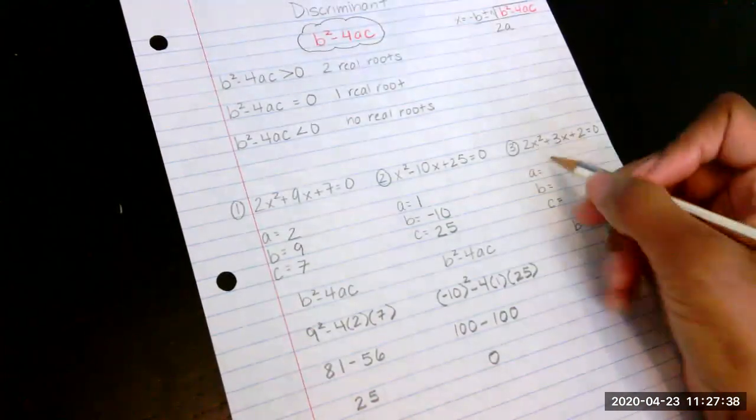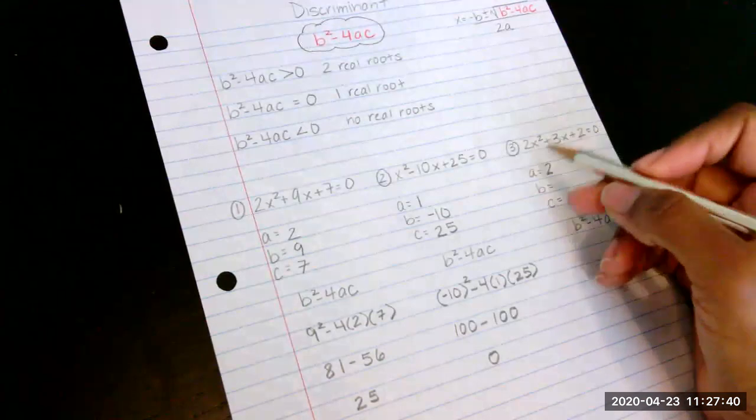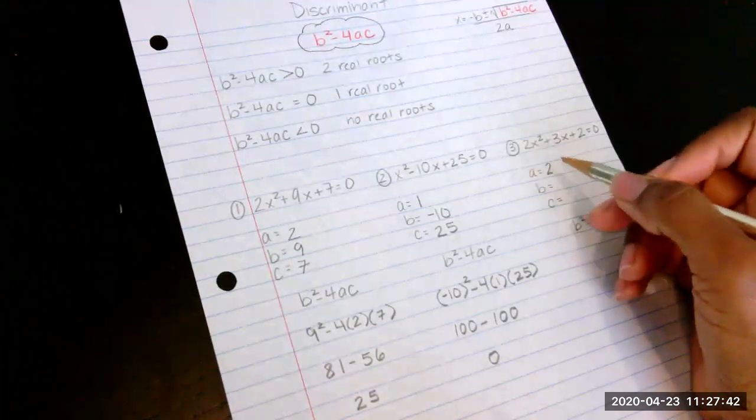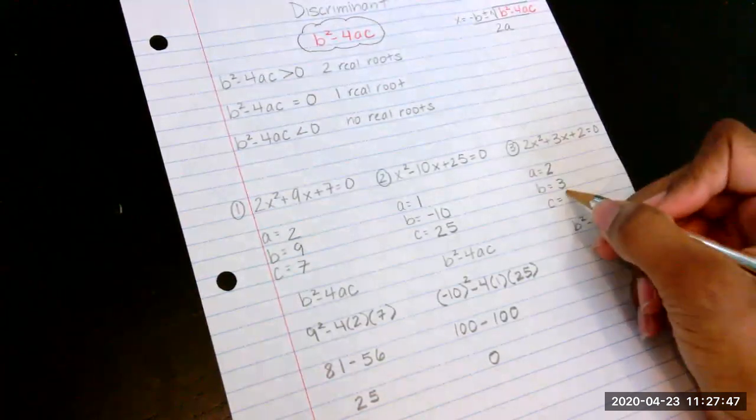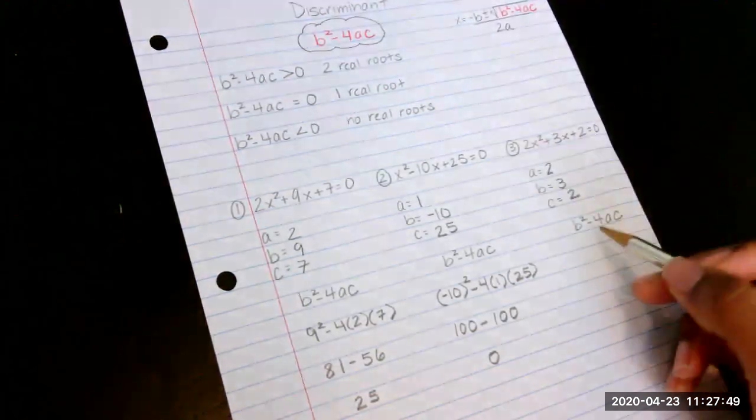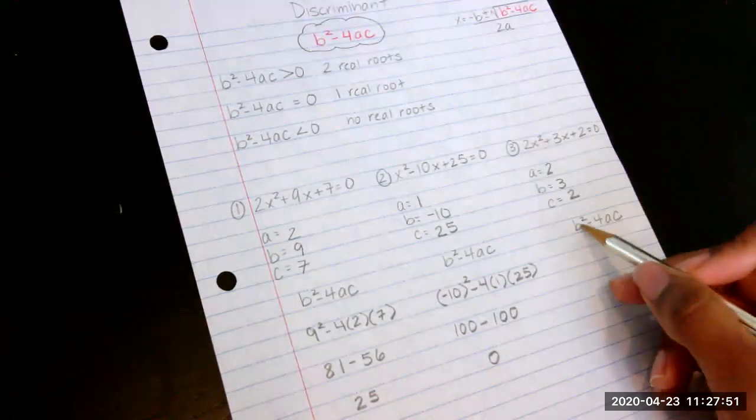In this case, our a is 2. You can always pause this video and then try it on your own and come back to check. Our b is 3, and our c is 2.